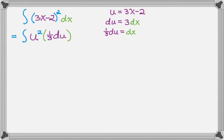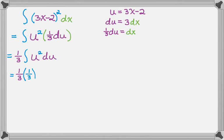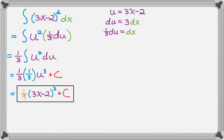The whole integral is now in terms of u. Rearranging a little bit, I'm going to actually integrate. So it's 1/3, and for u squared I add 1 to the exponent and multiply by the reciprocal — so it'll be 1/3 times u to the 3rd, and then plus c. That simplifies to 1/9, and then since u is actually equal to 3x minus 2, we get 1/9 times u cubed, so 1/9 times (3x minus 2) cubed plus c.